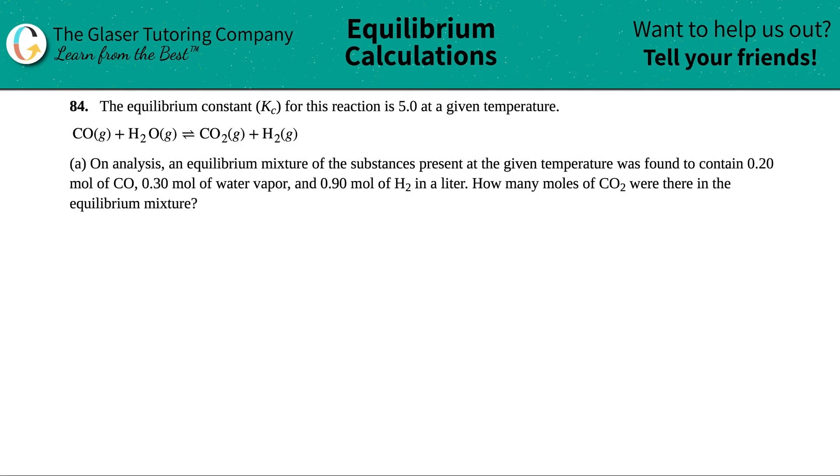Number 84. The equilibrium constant Kc for this reaction is 5.0 at a given temperature, and then they give us this equation. Letter A: On analysis, an equilibrium mixture of the substances present at the given temperature was found to contain 0.20 moles of CO, 0.30 moles of water vapor, and 0.90 moles of H2 in a liter. How many moles of CO2 were there in the equilibrium mixture?